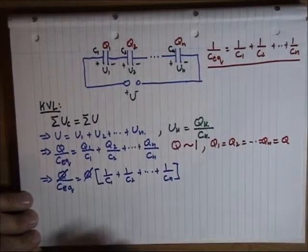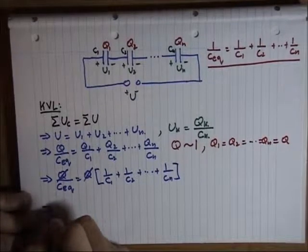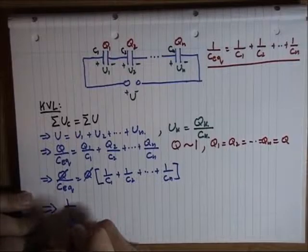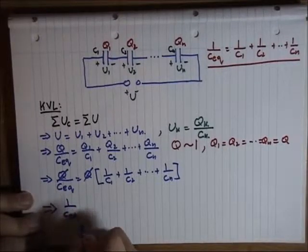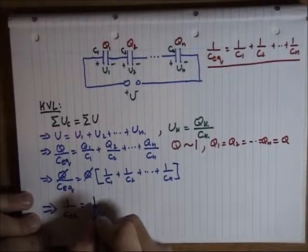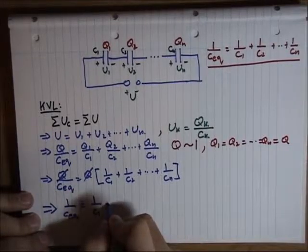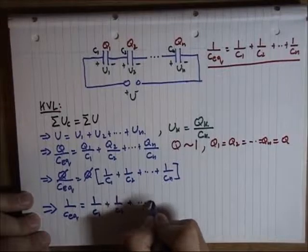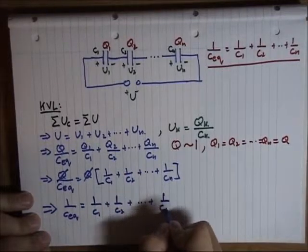Q and Q is simplified and we are left with 1 over C equivalent is equal to 1 over C1 plus 1 over C2 plus 1 over Cn.